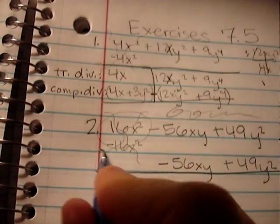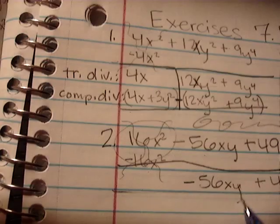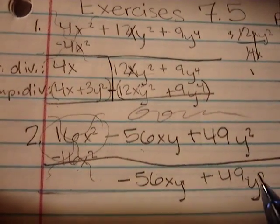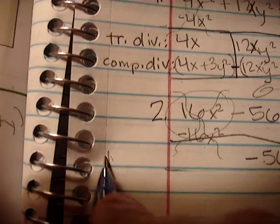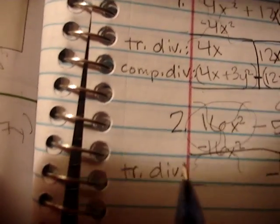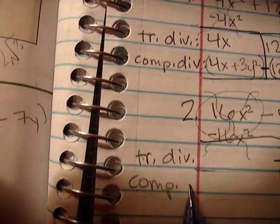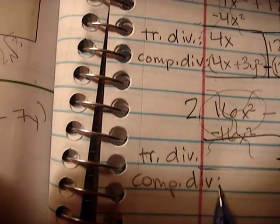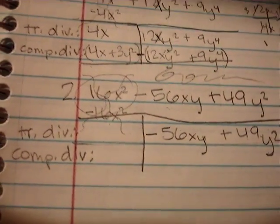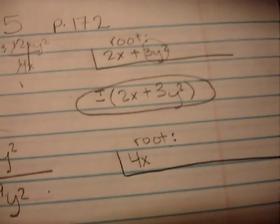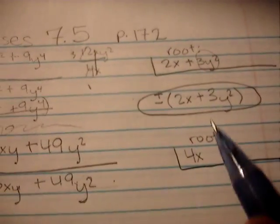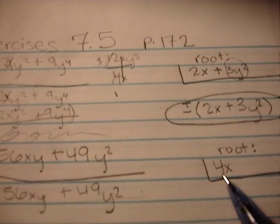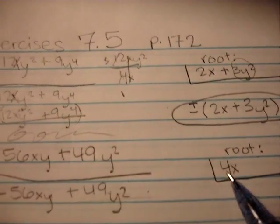Okay. Okay, now let's write our trial divisor to the side. And our complete divisor over here. Now, our trial divisor is equal to two times the root, the last root we found. Well, that's the first and last root we've found so far, so trial divisor is 8x.